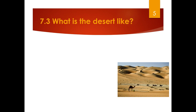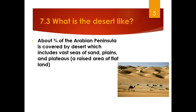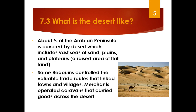What is the desert like? This is probably the most inhospitable desert on the planet Earth, with the possible exception of the Sahara. About three-fourths of the Arabian Peninsula is covered by desert, which includes vast seas of sand, plains, and plateaus — a plateau being an area of flat land at a high elevation. Bedouins are nomadic people that controlled the valuable trade routes that linked towns and villages; they did not stay in one place.